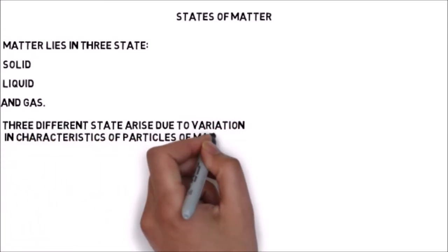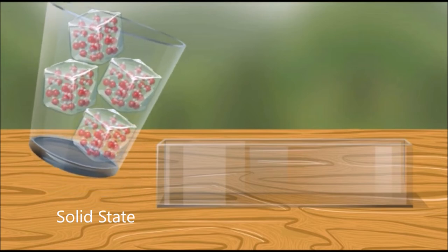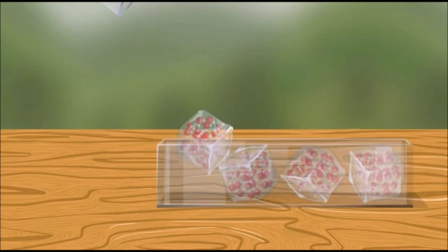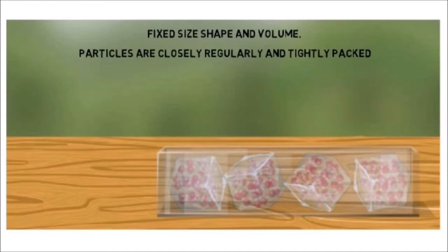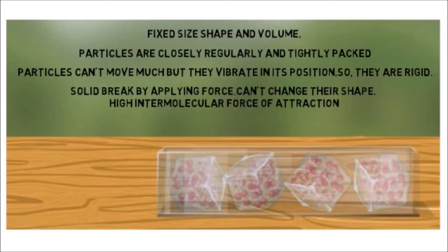Let us talk about the solid state. Matter in the solid state has a fixed size, shape, and volume. Particles are closely, regularly, and tightly packed. They cannot move much but they vibrate in a fixed position, so they are rigid. Solids break by applying force but it is difficult to change their shape. They are incompressible. Solids have high density as compared to liquids and gases. We have some exceptions — some solids do not follow the above characteristics.